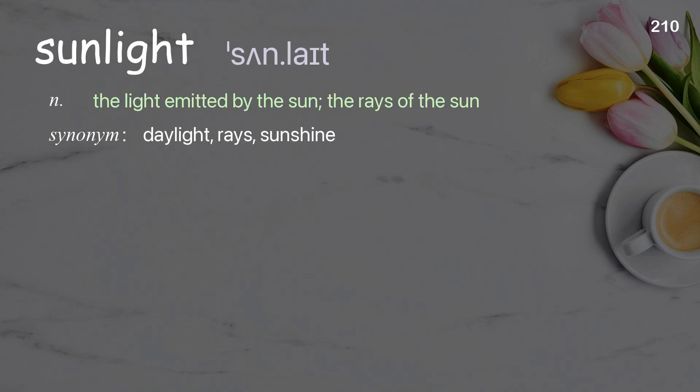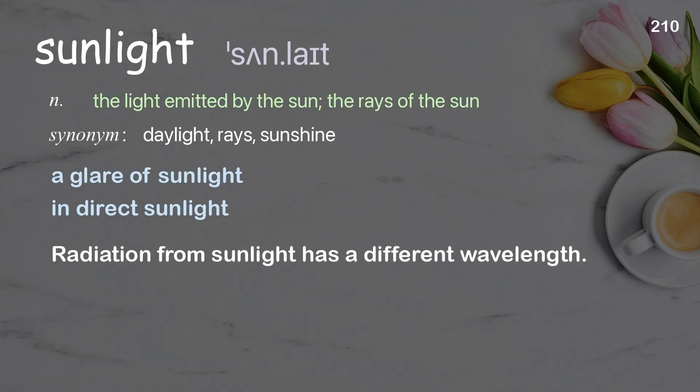Sunlight: the light emitted by the sun; the rays of the sun. Examples: a glare of sunlight; indirect sunlight. Radiation from sunlight has a different wavelength.